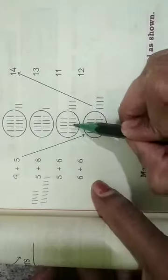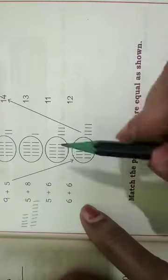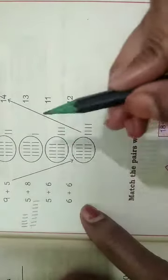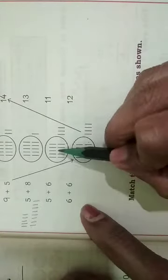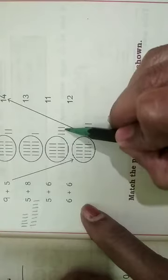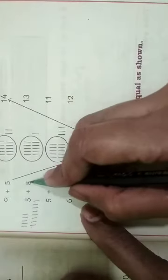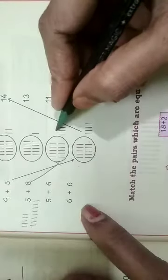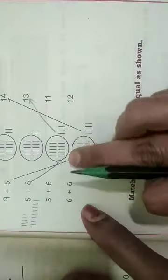13 means this. Here they split 13 into a 10s group and a units group — 1 group of 10s and 3 units. That's why we match this number here. 10 plus 3 equals 13.